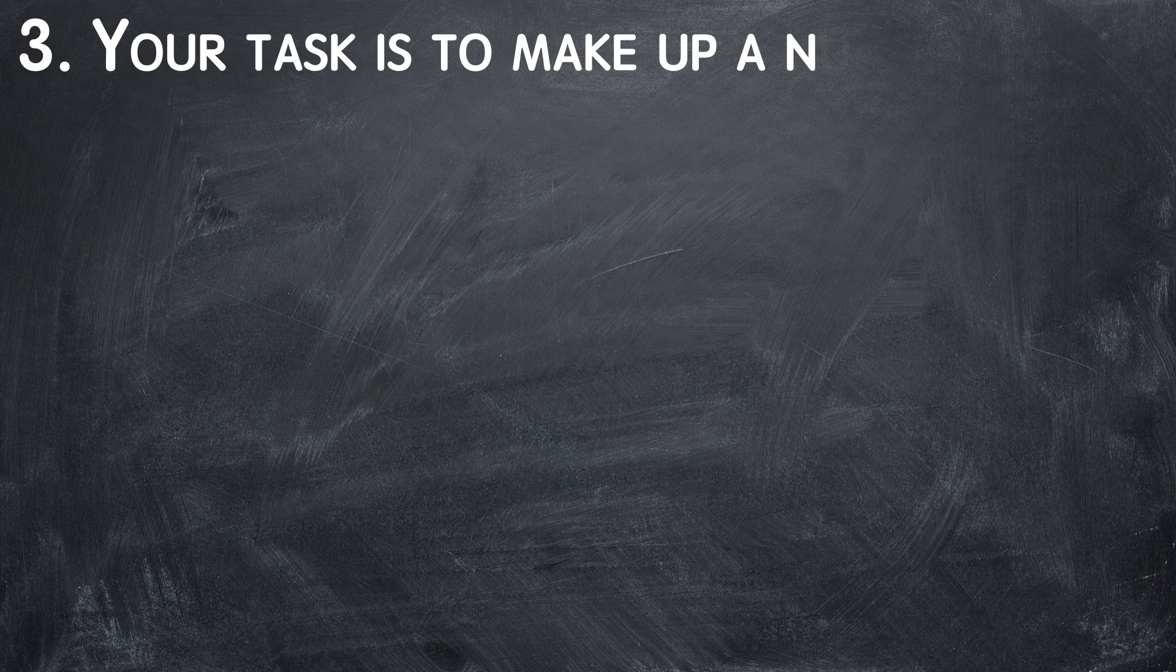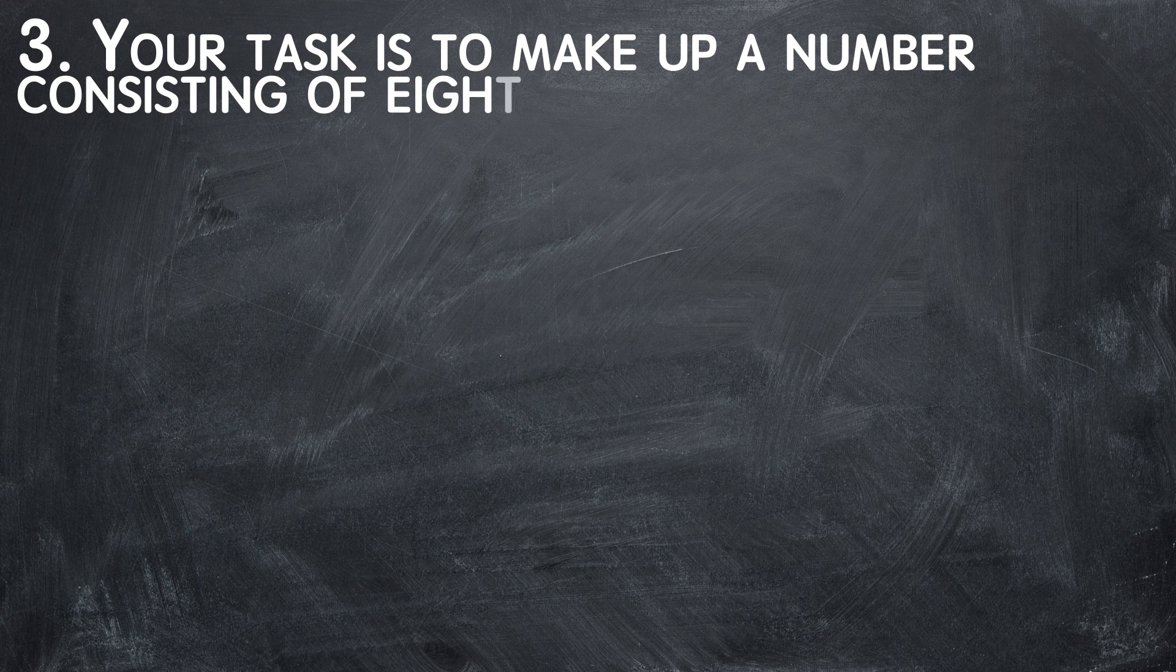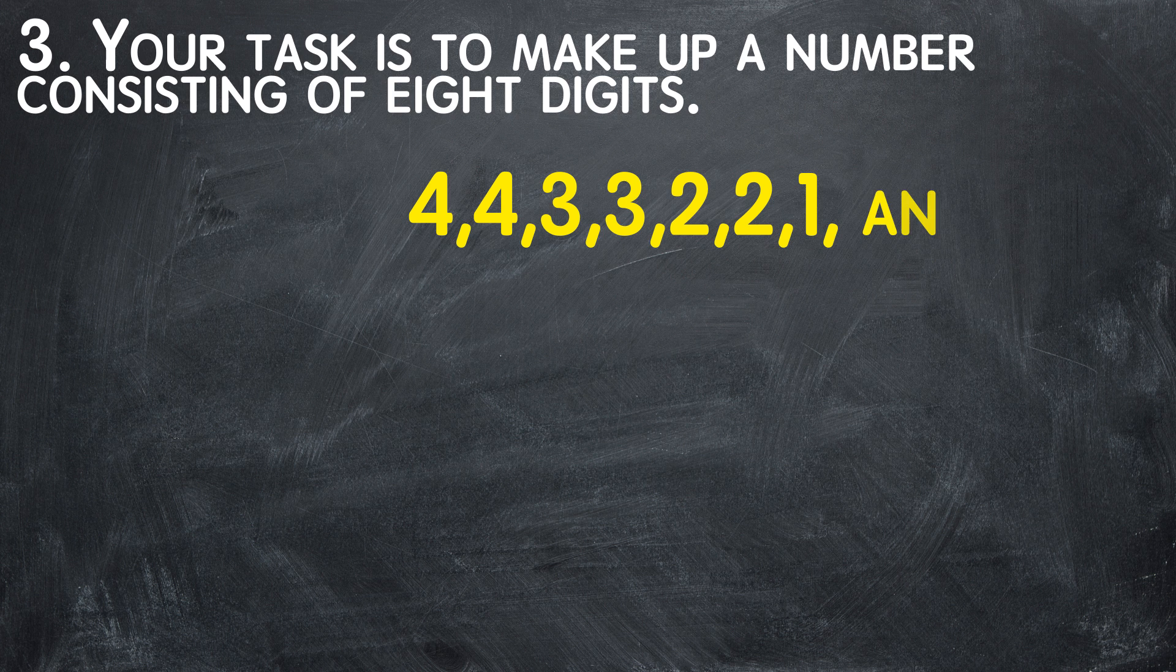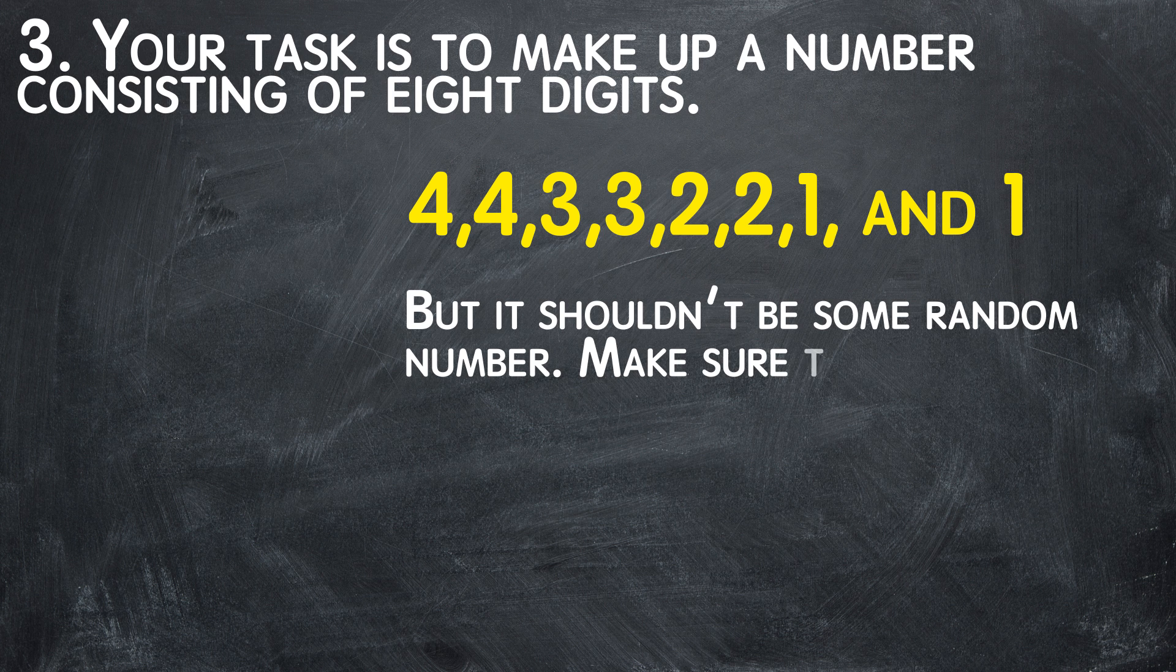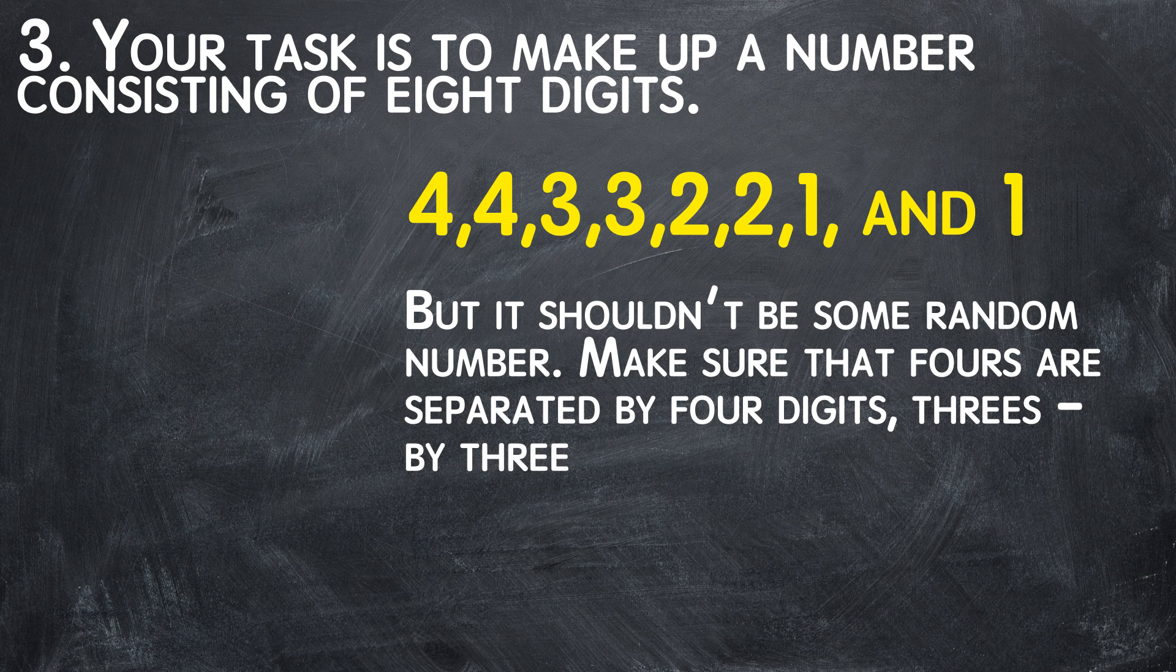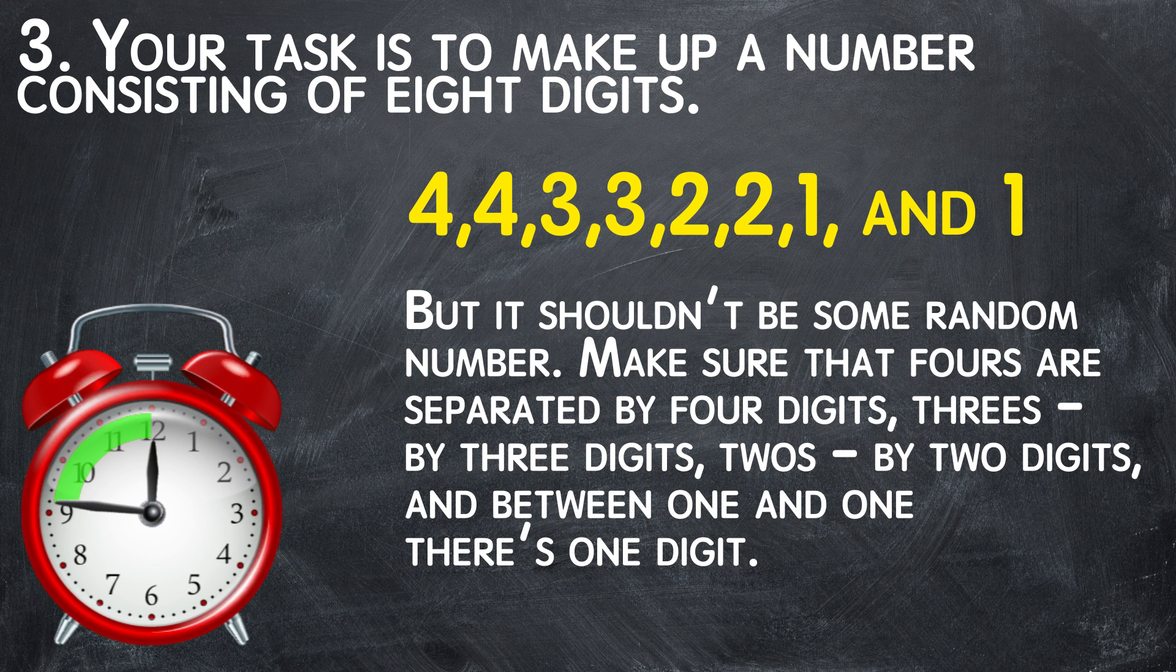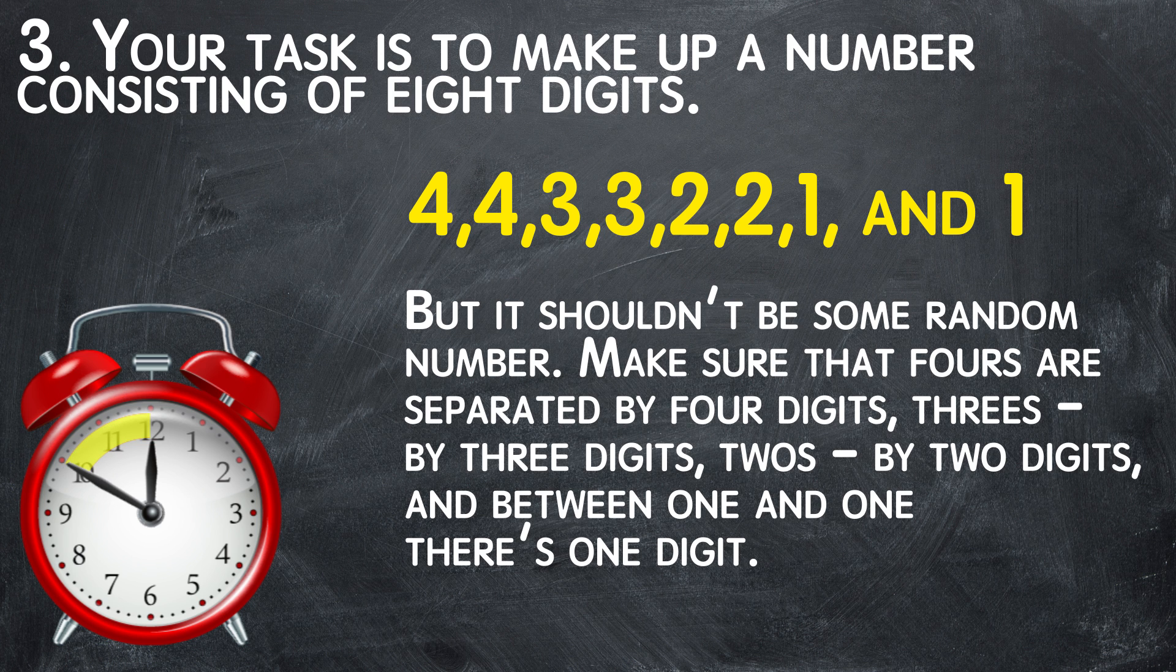3. Your task is to make up a number consisting of 8 digits. You can use the following characters: 4, 4, 3, 3, 2, 2, 1, and 1. But it shouldn't be some random number. Make sure that 4s are separated by 4 digits, 3s by 3 digits, 2s by 2 digits, and between 1 and 1, there's 1 digit. This is getting trickier and trickier. Take your time. If you need, you can even pause the video.